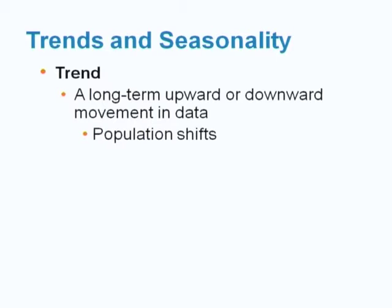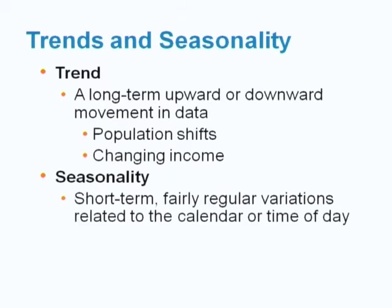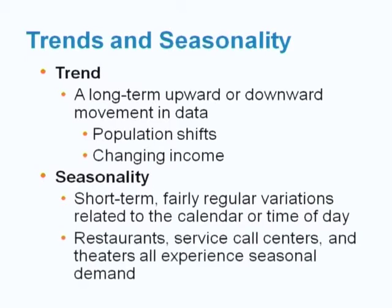Trend is a long-term upward or downward movement in data, related to factors such as population shifts and changing income. Seasonality is a short-term, regular variation related to the calendar or time of day. Restaurants, service call centers, and theaters all experience seasonal demand.